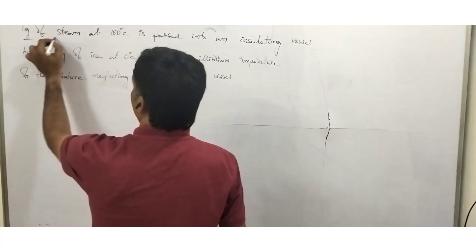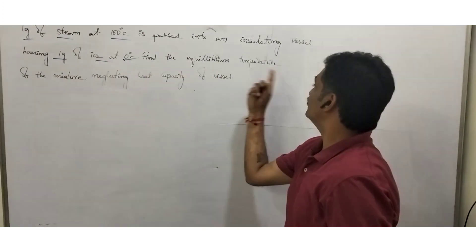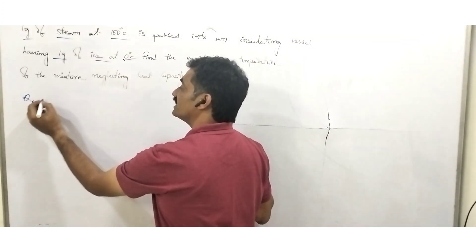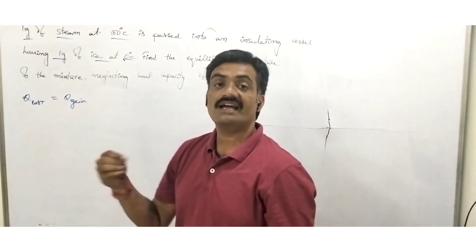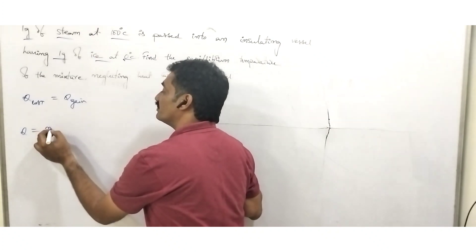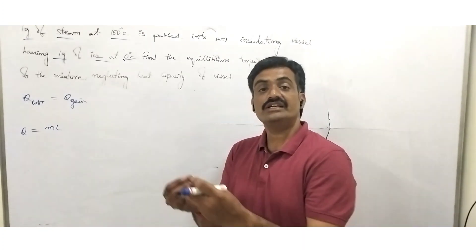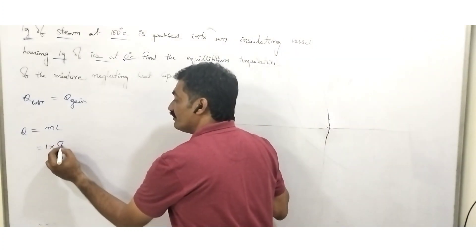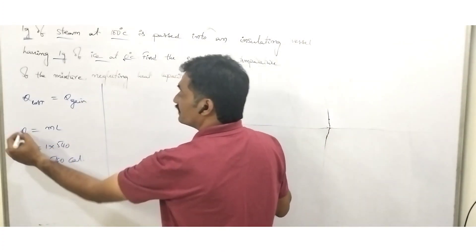Problem 1: 1 gram of steam at 100°C is passed into an insulating vessel having 1 gram of ice at 0°C. We have to find the equilibrium temperature of the mixture. According to the principle of calorimetry, heat lost by a body is equal to heat gained. Observe that steam has lost the heat whereas ice has gained the heat. In the case of steam, the heat lost by the body is represented as mL because it is converting from steam into water by giving away its heat. So mass of steam is 1 gram, and latent heat of vaporization is 540 calories per gram — the heat transferred is 540 calories.